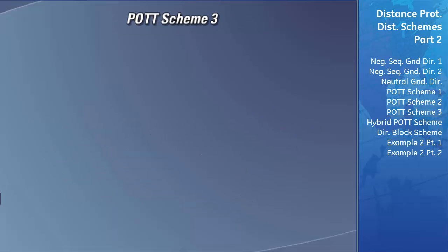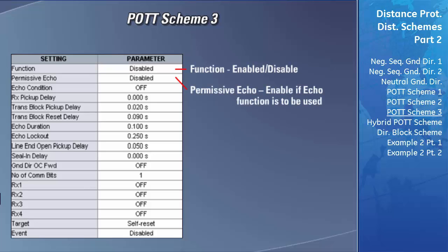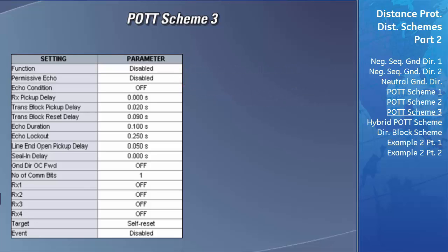We will now go over the settings that need to be configured to have the POTT scheme operate correctly. Before the POTT scheme can be used in the relay, it must first be enabled in the function field. If you wish to use the echo function, you will need to set the permissive echo field to enabled. If you wish to customize the enabling of the echo function, select Custom in this field. The echo condition field needs to be set to tell the D60 under what conditions to echo the POTT keys received if the permissive echo setting is configured to Custom.